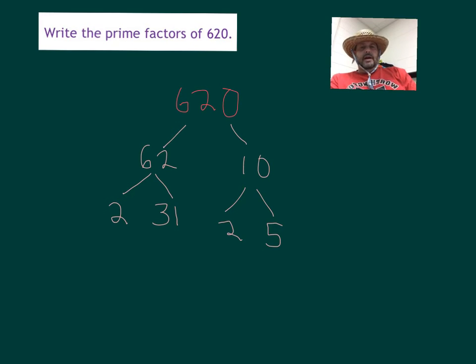So now I am done except for the final step, which is to write my new multiplication problem. I have 2 to the second power because I have two 2s in my problem, 5 times 31. This is the prime factorization of 620.